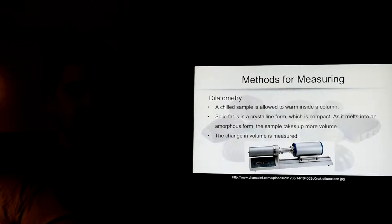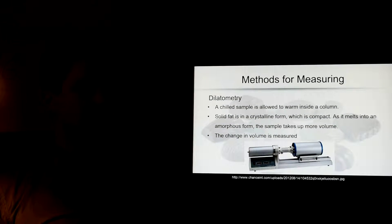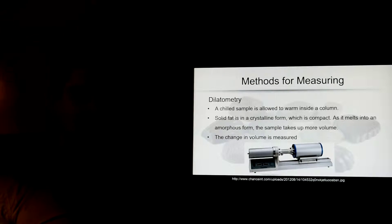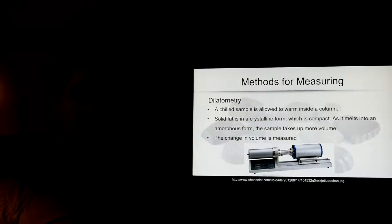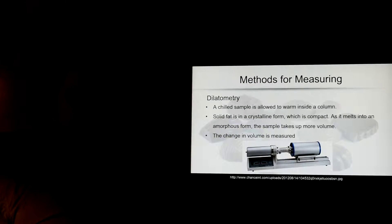One of the methods of measuring this, which is a bit older, is the dilatometer. We take a chilled sample and slowly warm it inside a column. Because solid fat is in a crystalline, highly ordered form, it's a lot more compact. And when it melts and takes on an amorphous form, it grows in volume. That change in volume is what we measure.